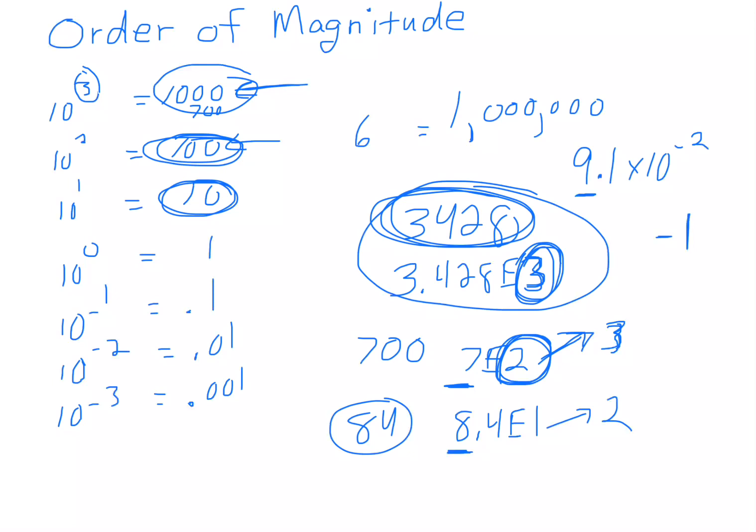Okay? So how do we write that? 0.091 is how you write this number.